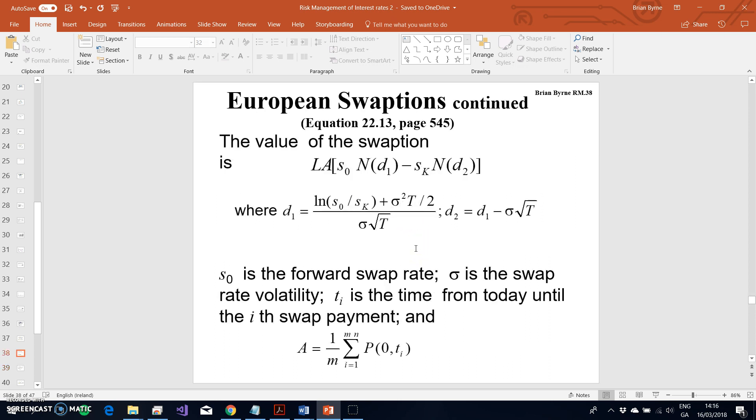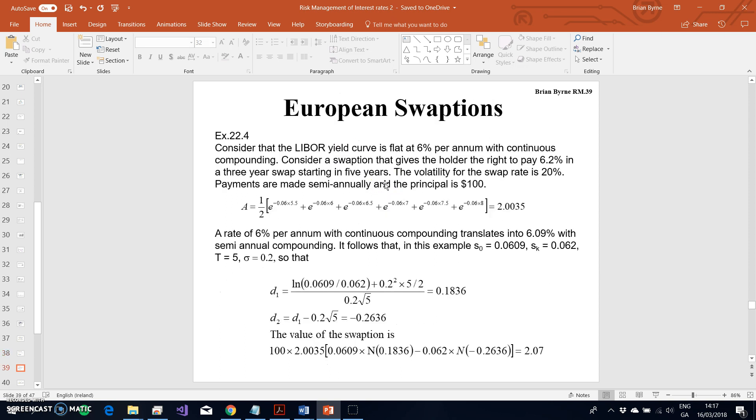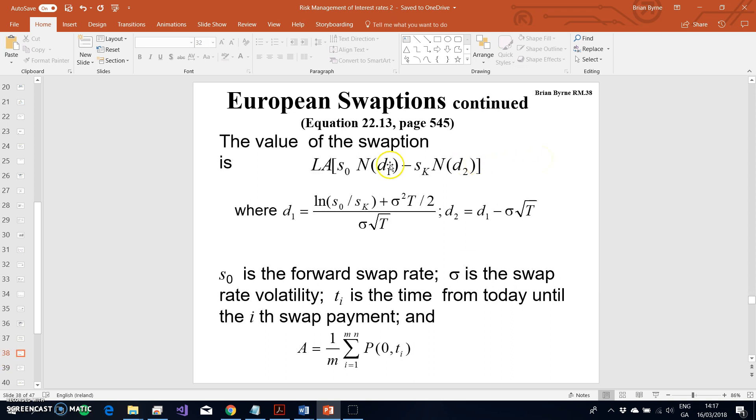The formula that we use here is based on the Black model, and the estimation for the value of the swaption to the party paying fixed with the right to pay fixed is analogous to a call option. So we have this forward swap rate and then we take the normal cumulative probability.